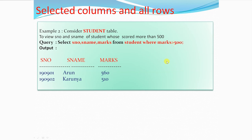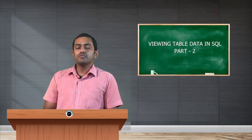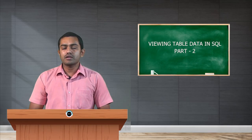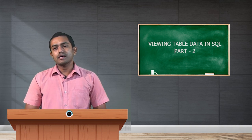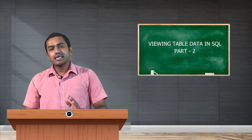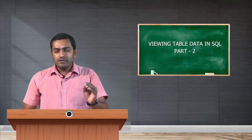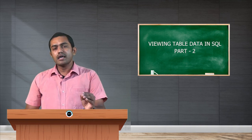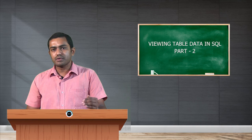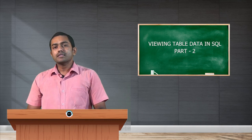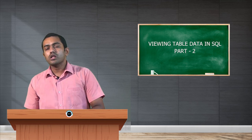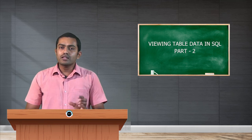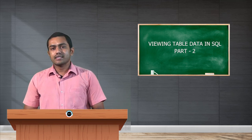This is about viewing data in our table. In this concept, we have two categories: all rows and all columns, and filtering data. Filtering data has three sub-categories: selected columns and all rows, selected rows and all columns, and selected rows and selected columns.